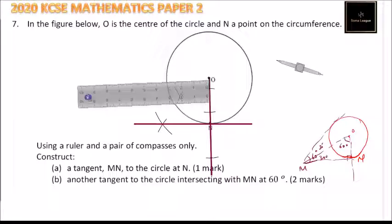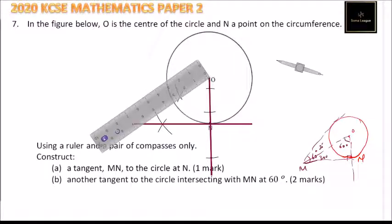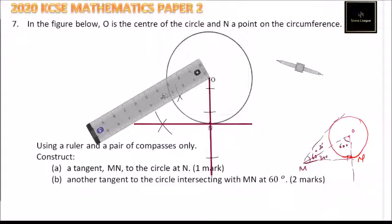You join this point here and the one that we have identified. That will make an angle of 60 and it is going to help us get the angle of 60. So that is where we will construct a line joining that.